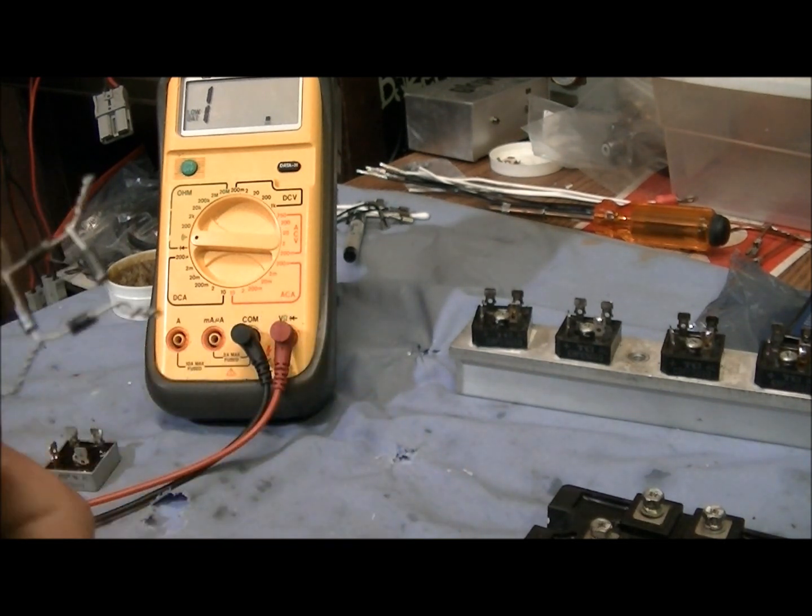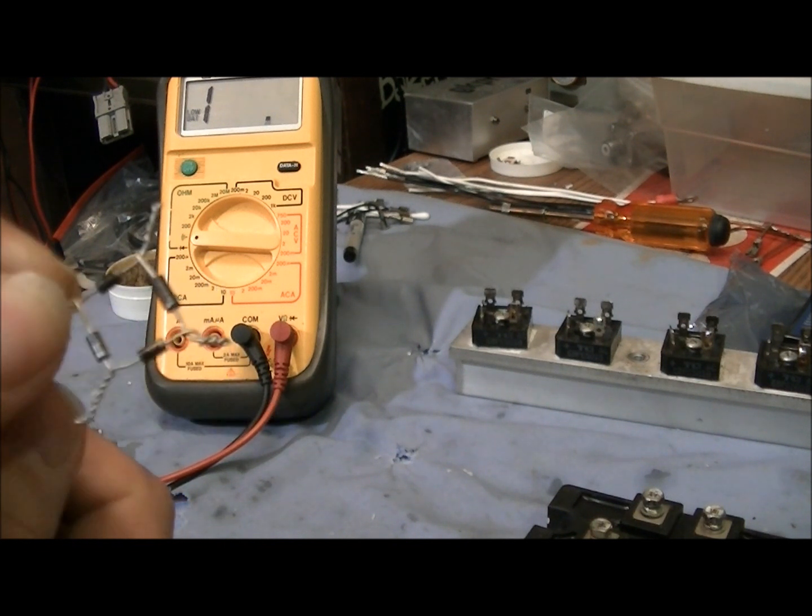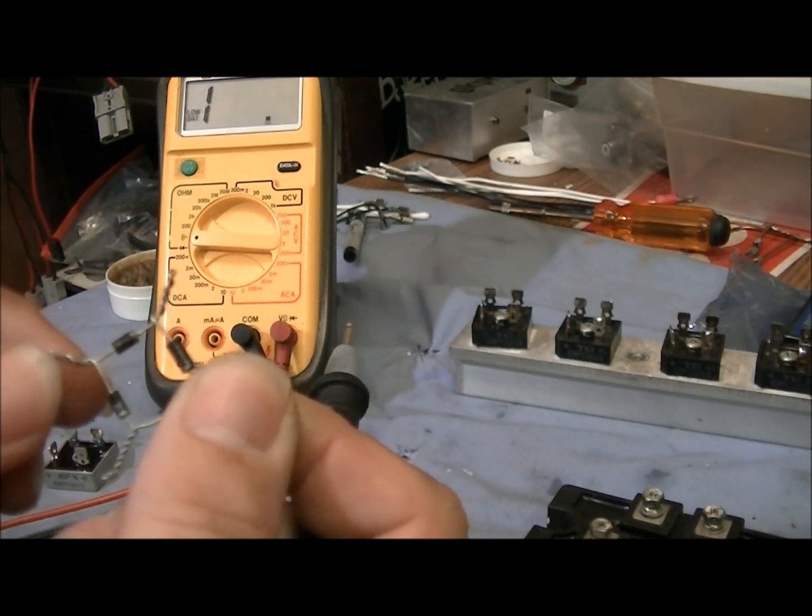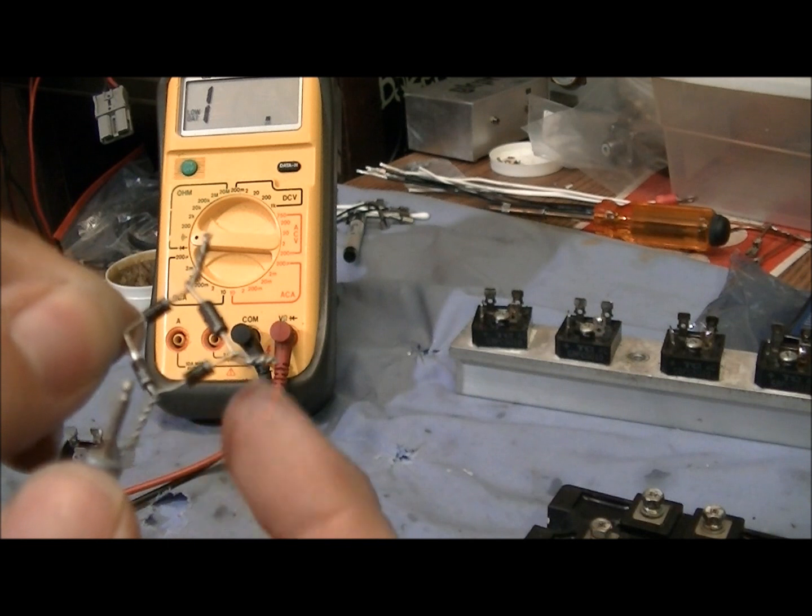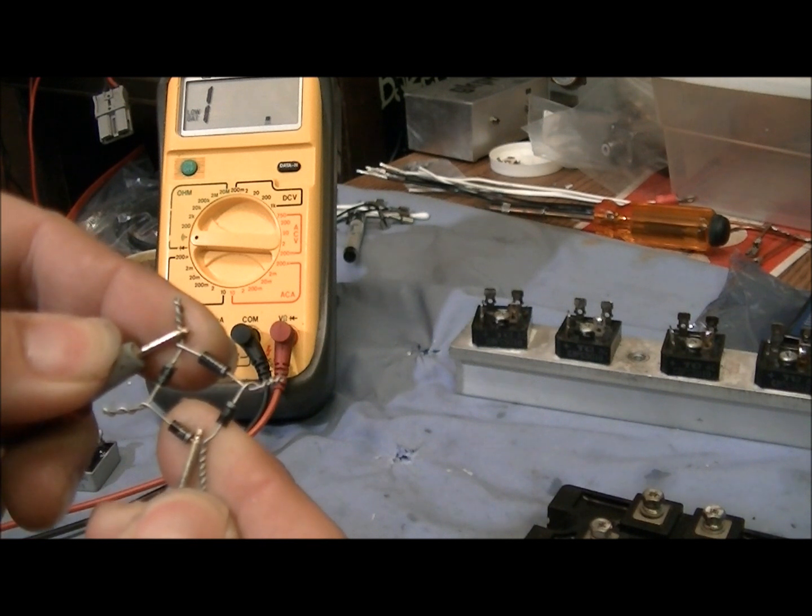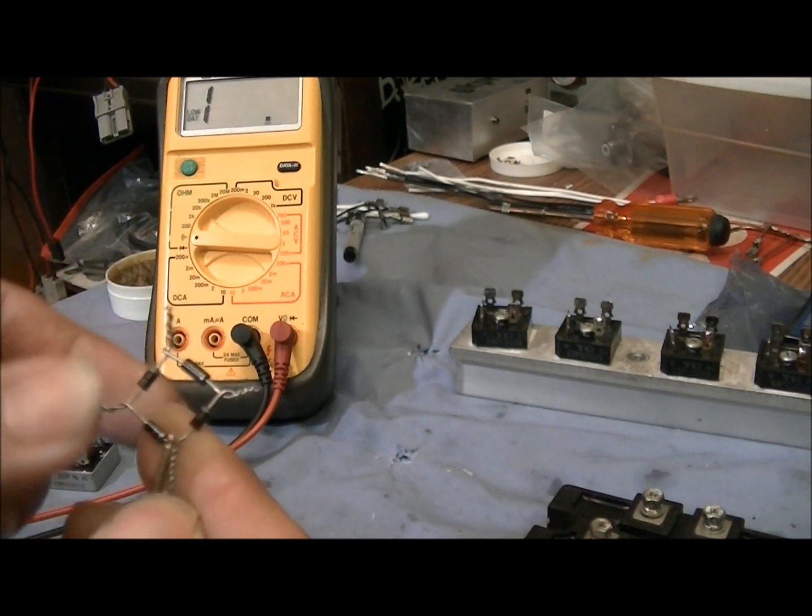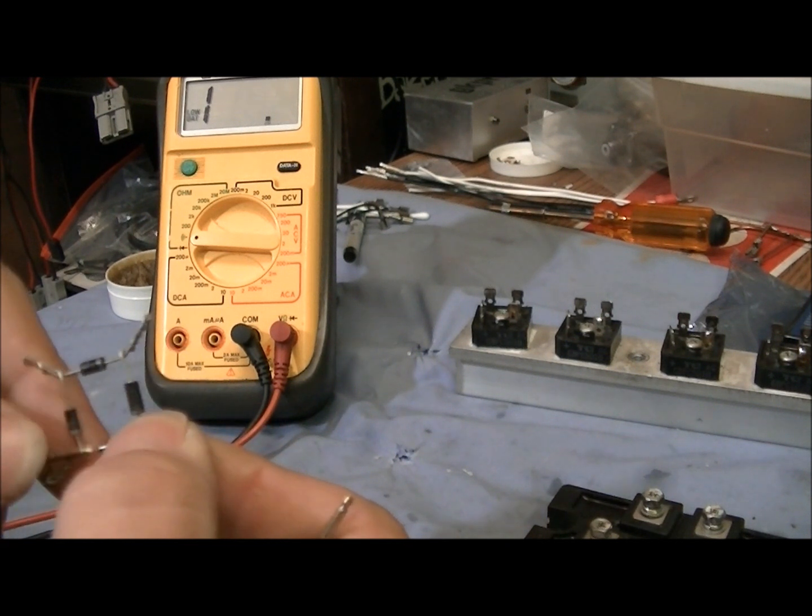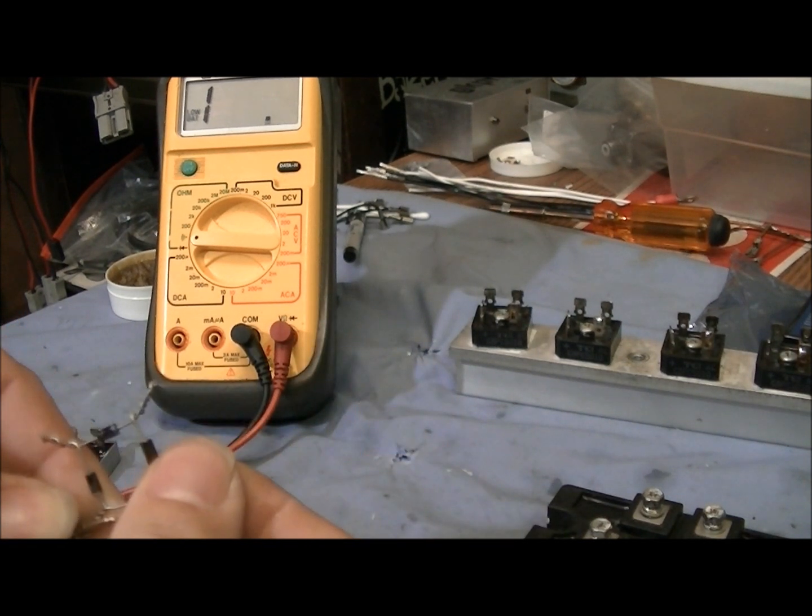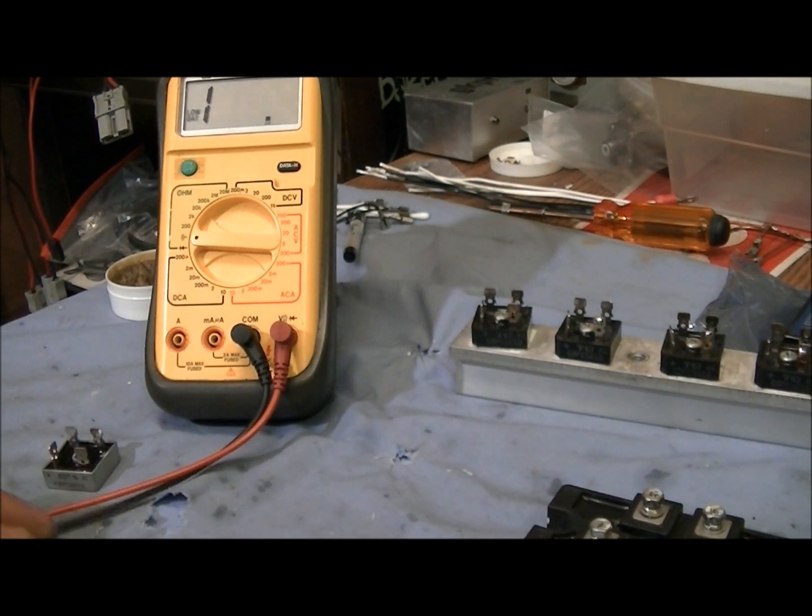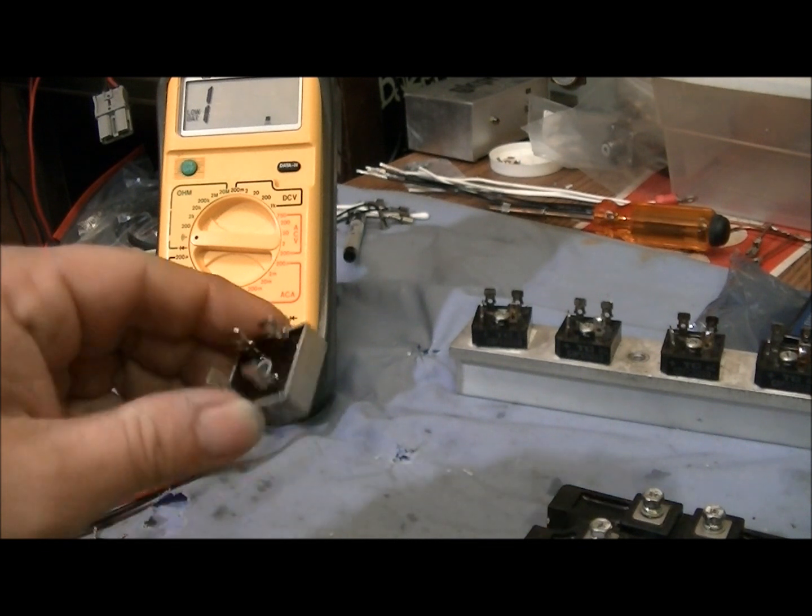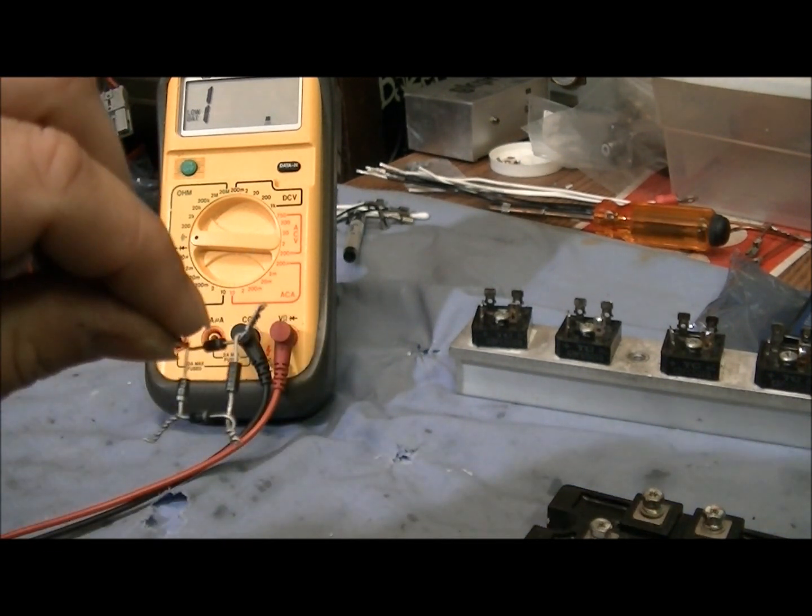Just as an example with this. In this orientation, this would be positive, this would be negative. Here's your two ACs. So I'm going to go AC to AC. As you see, no indication on the digital voltmeter. Of course I can flip around. So far so good. This bridge rectifier, this bridge is good so far.